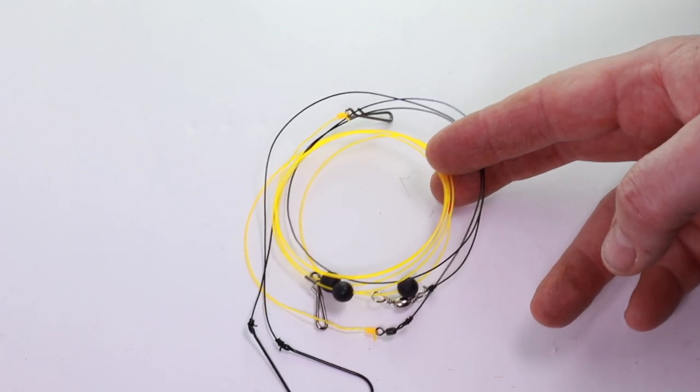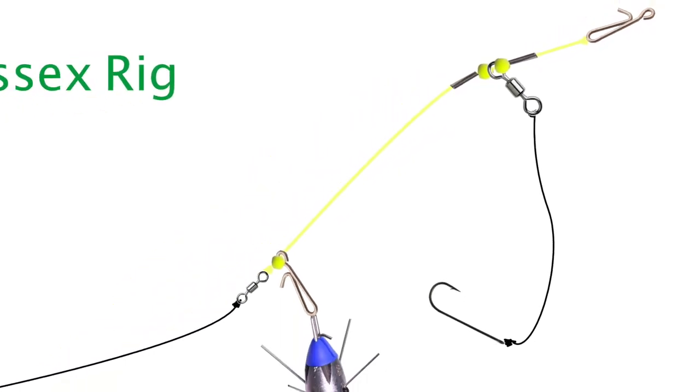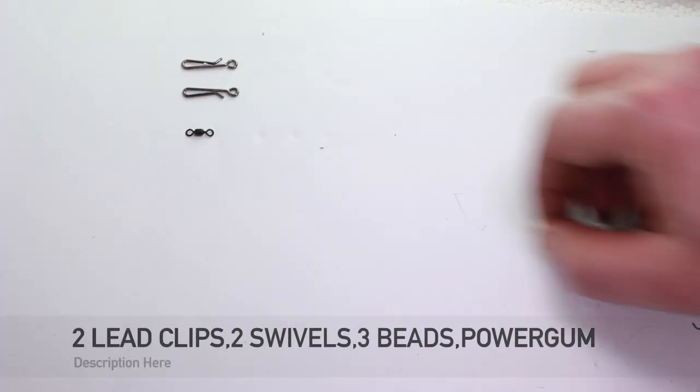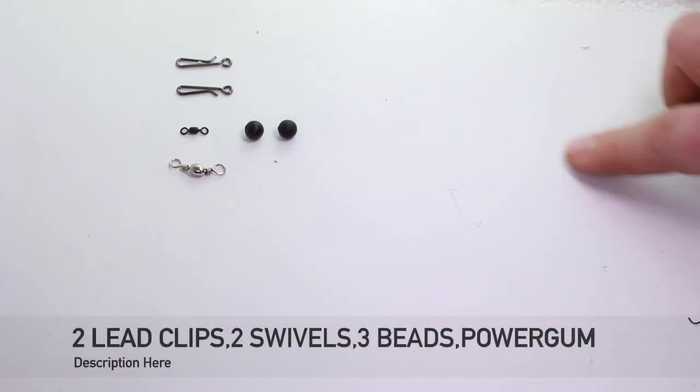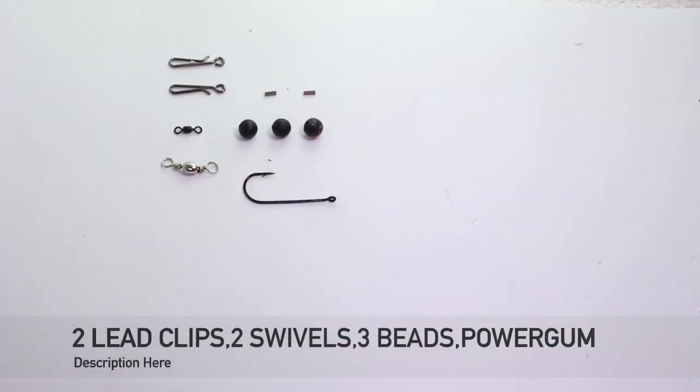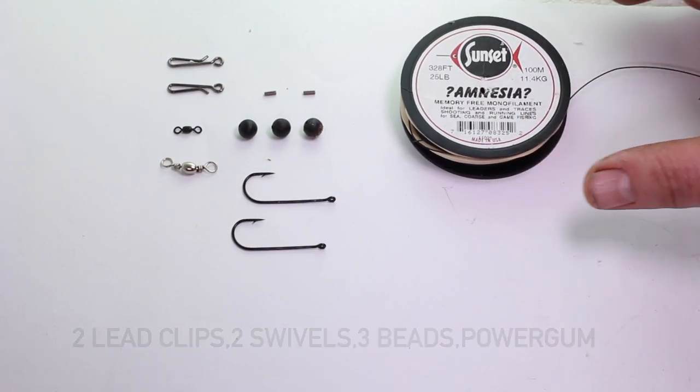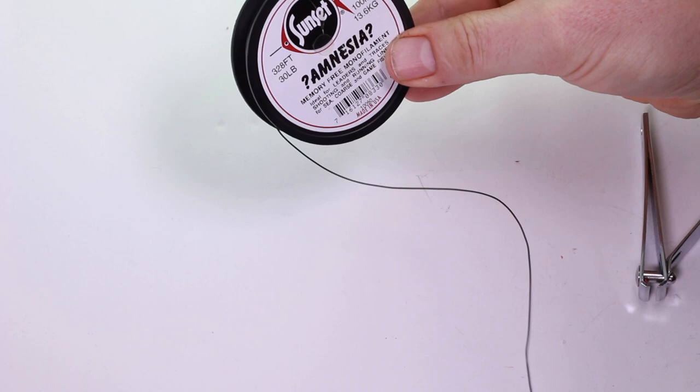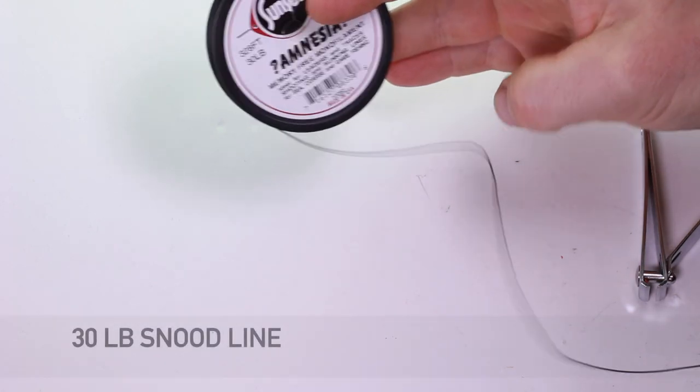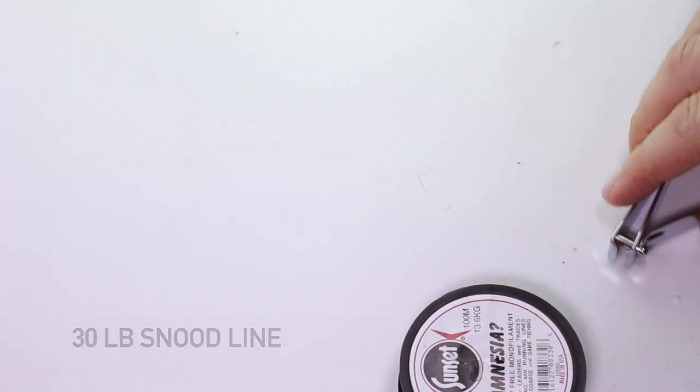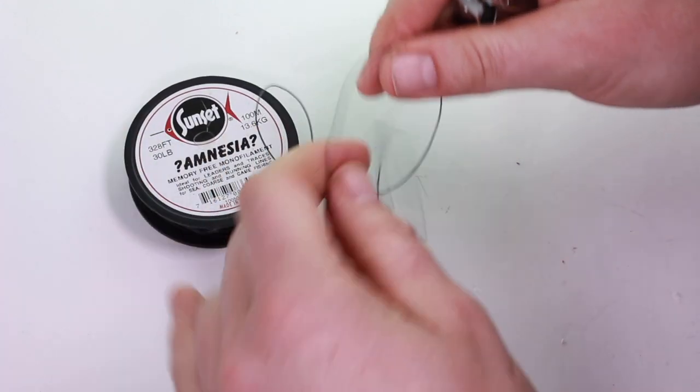It probably should only take you a couple of minutes to make as well. First thing to do is cut off some of your snood line. This is 30 pound amnesia that we're using. You want about a foot of this amnesia line.